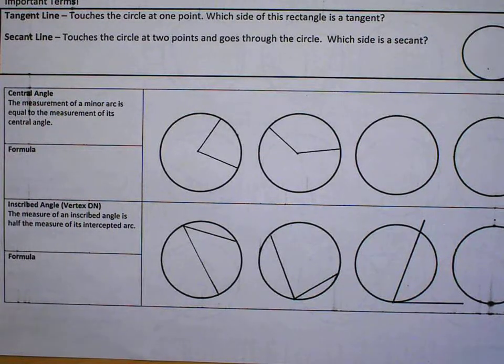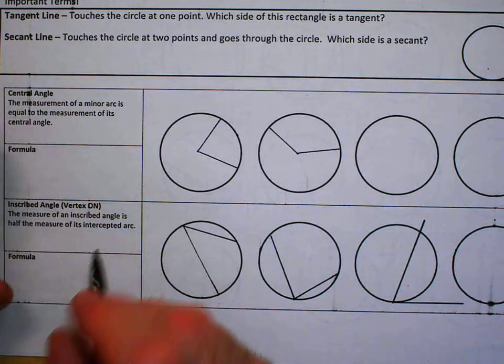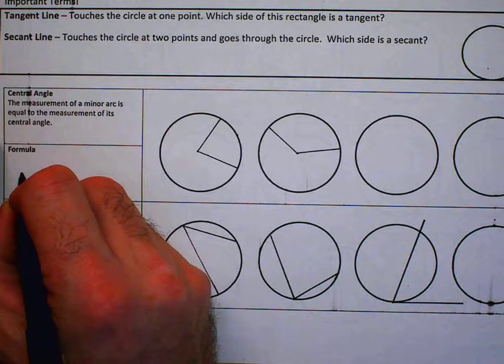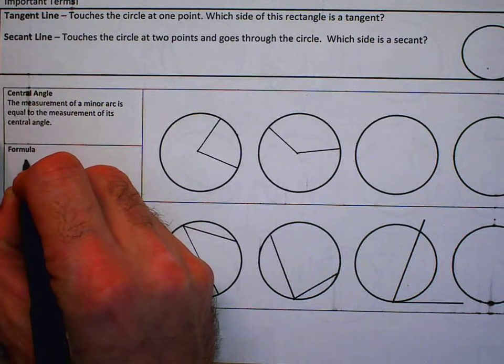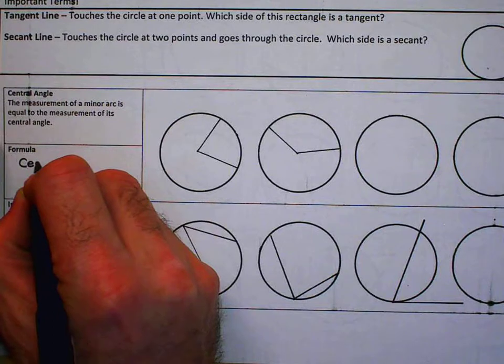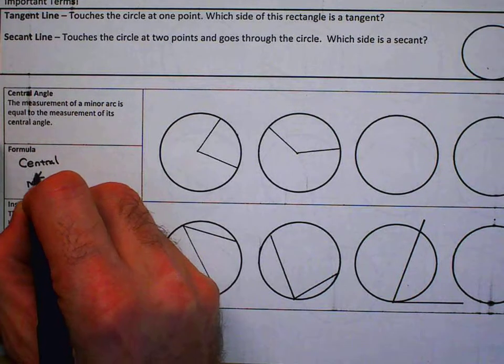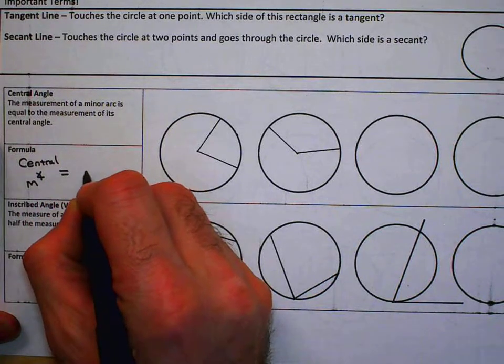Hello, this is Mr. Zanolato. I'm going to go over some angle-arc relationships in circles. We have five basic formulas. The first one you've been told about on day one of this unit: central measure of the angle will equal the arc measure.